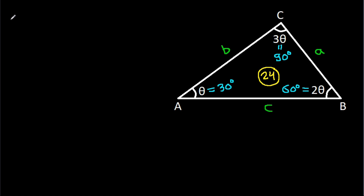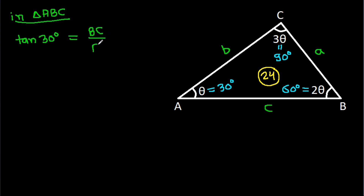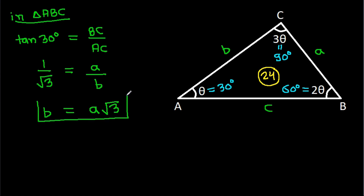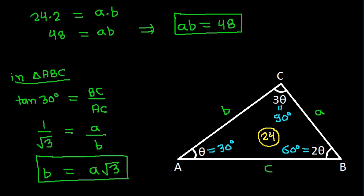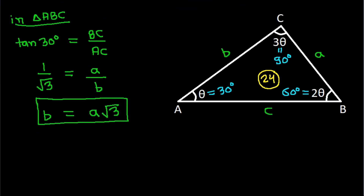Now, in triangle ABC, tan 30 degrees equals BC divided by AC. And tan 30 degrees is 1 over square root of 3, which equals a divided by b. If we cross multiply, then b equals a times square root of 3. And we have a times b equals 48.